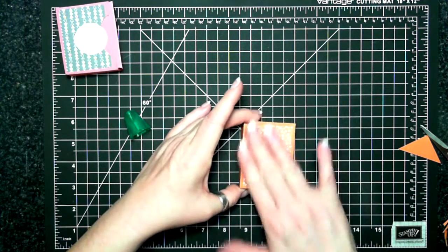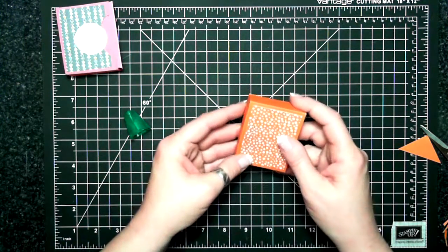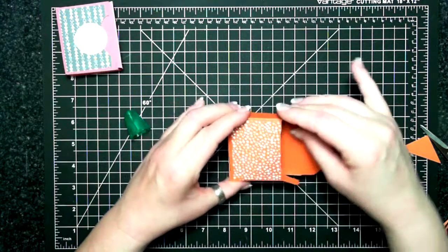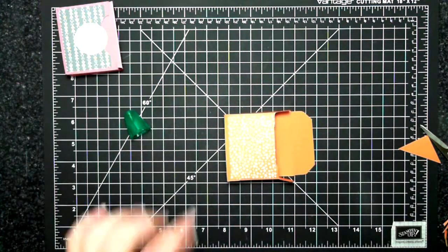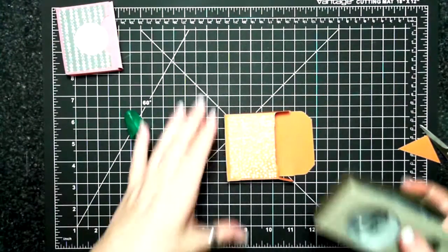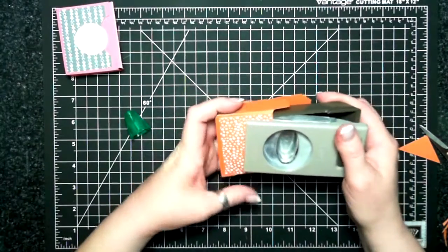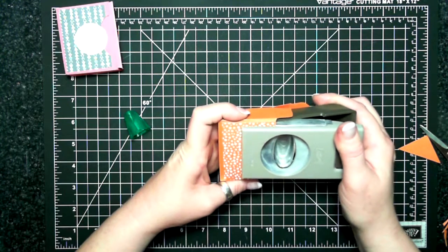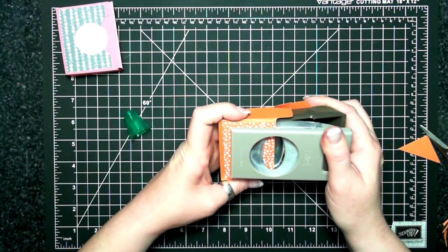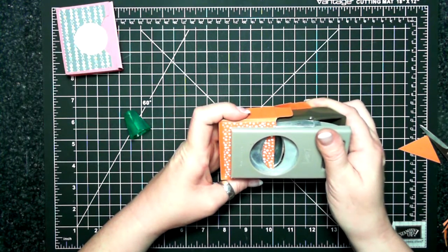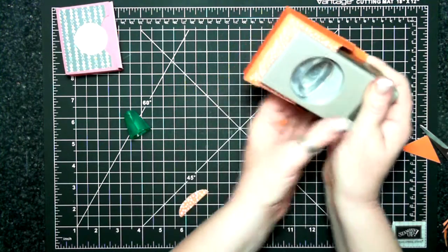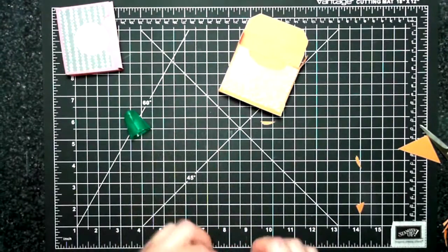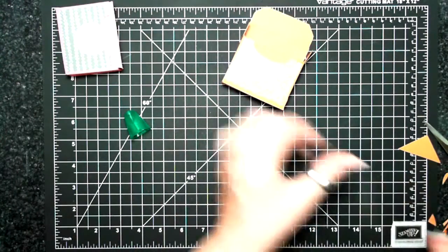I'll be honest it's nice using the Tombow because you can move stuff around a little bit, it takes a minute to set. All right so I've done another box similar to this and I used the small oval punch and this time I'm using the large oval. So it gives it a nice finished look.